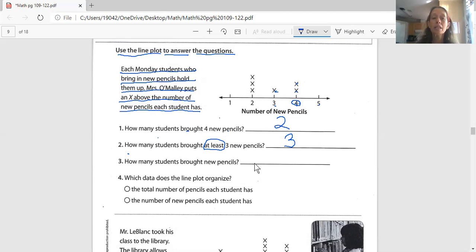And then number three says, how many students brought new pencils? Well, that includes everybody on our graph. Everybody. So really, all we have to do is count the X's. One, two, three, four, five, six. And our answer is six.